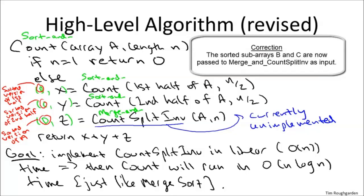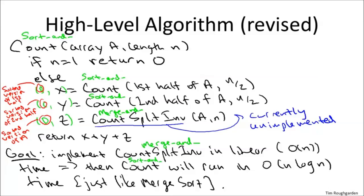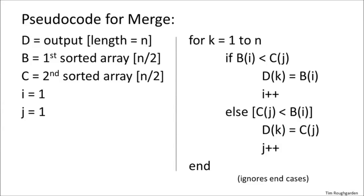We shouldn't be intimidated by asking our combining subroutine to merge the two sorted subarrays B and C, because we already know how to do that in linear time. The question is just: piggybacking on that work, can we also count the number of split inversions in an additional linear time? We'll see that we can, although that's certainly not obvious. To develop some intuition for why merging naturally uncovers the number of split inversions, let's recall the definition of the original merge subroutine for merge sort.